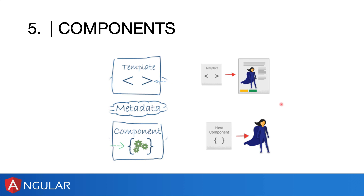There is also at least one root component, same as there's a root module. You have the app module; in this case you have the root component. Remember: if I say 'controllers' or 'application data,' you should jump into the component file to show me your logic. It gets associated with a template, which is the view — whatever data you're defining here in the component.